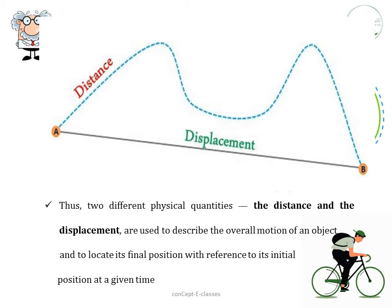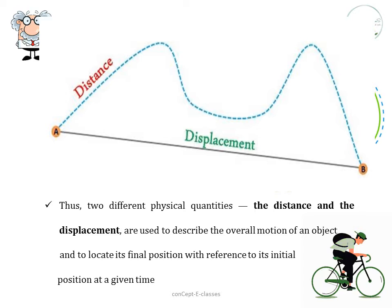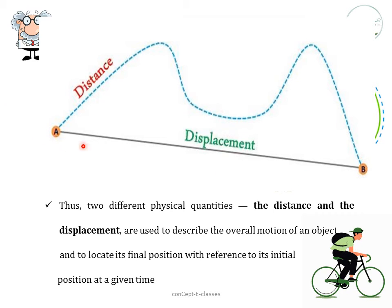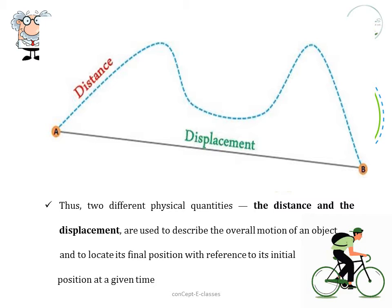Distance is the total path covered by an object from its initial to its final position, and displacement is the shortest distance measured from the initial to the final position. Distance is a scalar quantity — it has only a numerical value, it is always positive, it cannot be negative or zero. Whereas displacement is a vector quantity — it shows direction, and if the initial and final position are the same, then we can say it is zero displacement. So the values can be positive, negative, or zero.